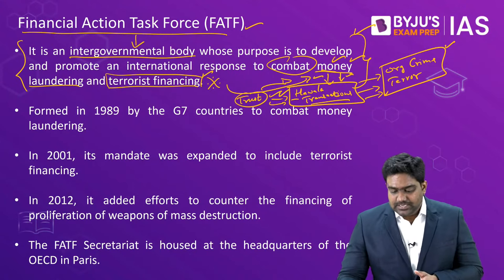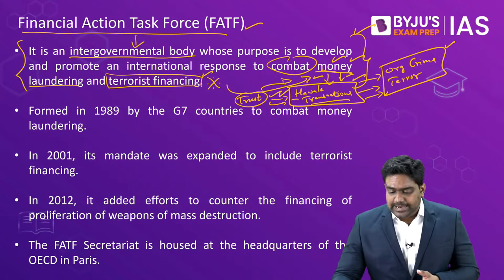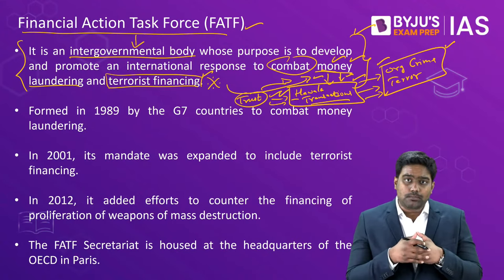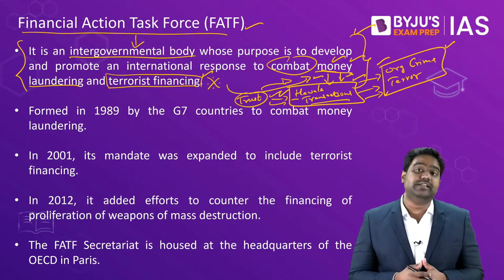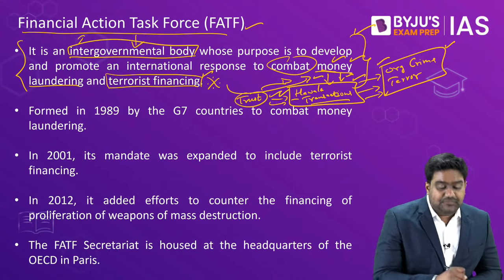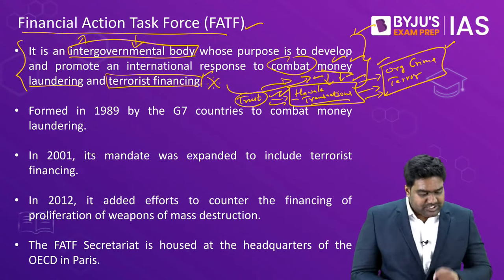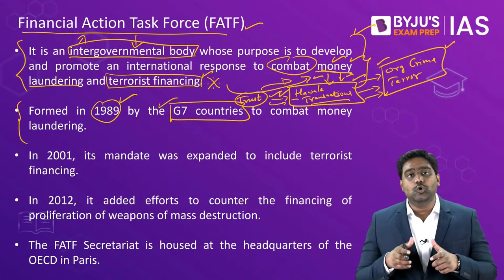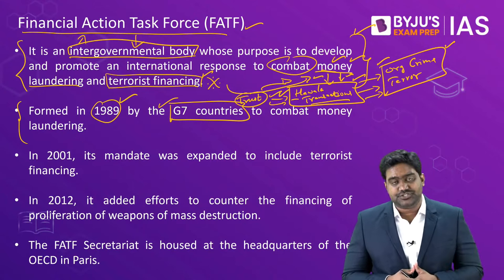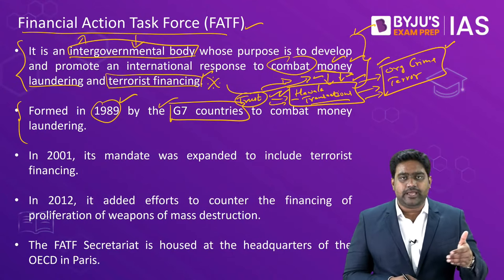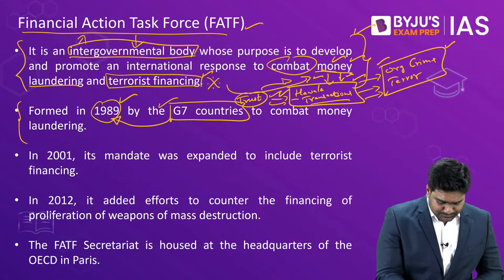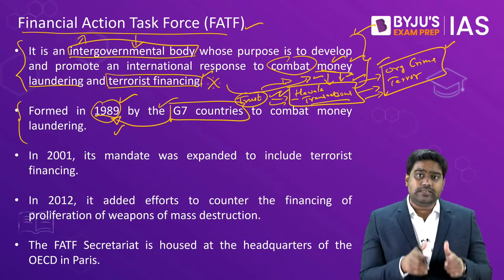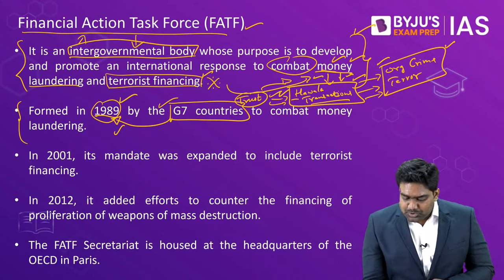Since money laundering is closely linked with organized criminal groups and terrorists, there exists a direct link between money laundering and terror financing. To combat these economic and security threats, there is an intergovernmental body known as FATF, the Financial Action Task Force. This organization was set up in 1989 by the G7 countries — the group of Western industrialized nations including the US, Canada, UK, France, and others. When the organization was set up, it had only one objective: to combat money laundering.